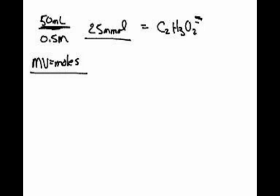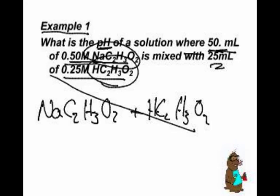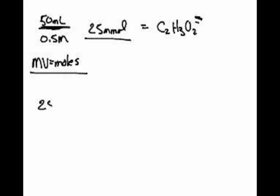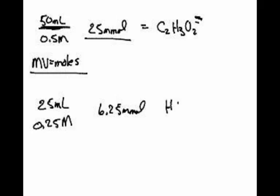And what was the other chemical I had? Acetic acid - 25 milliliters of 0.25 molar. So I have 25 milliliters of 0.25 molar acetic acid. That's 6.25 millimoles of the acetic acid.